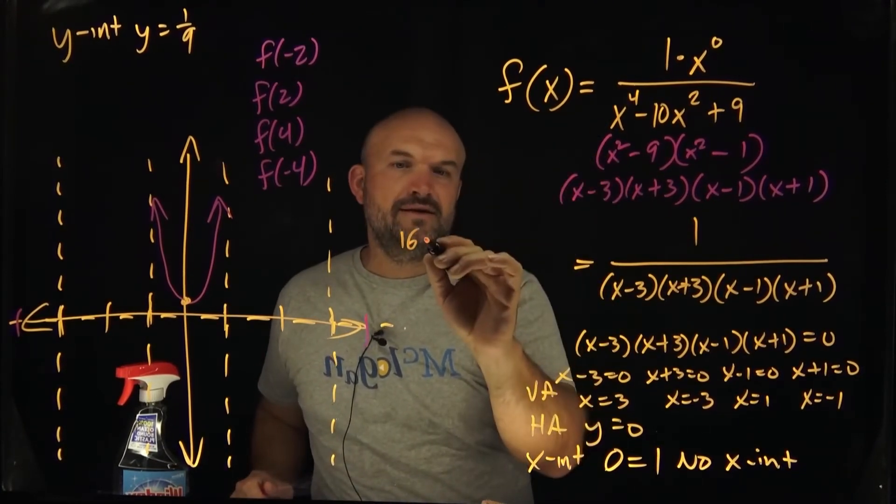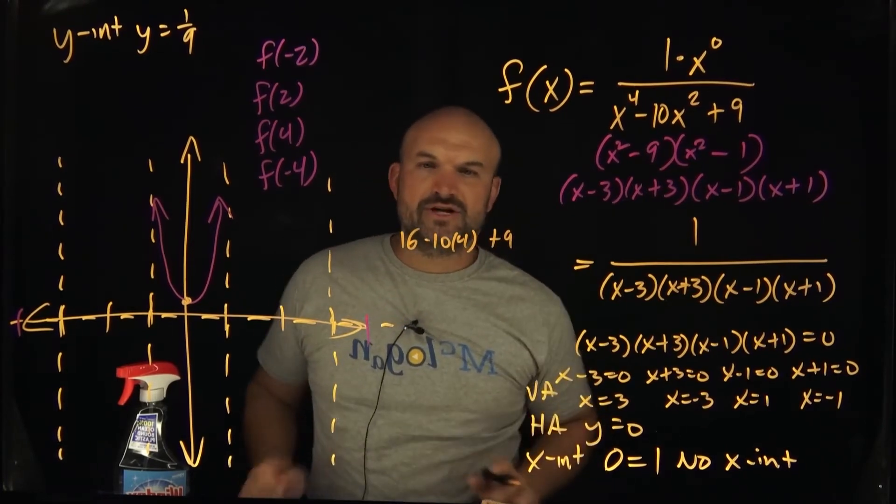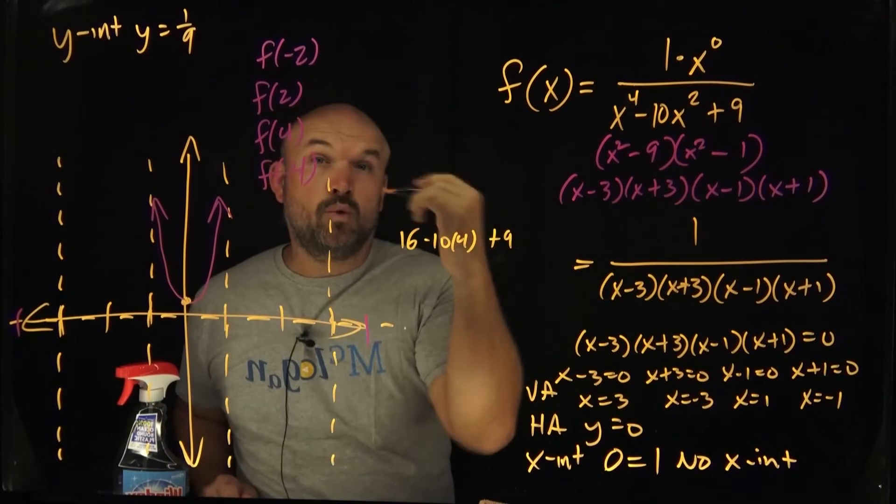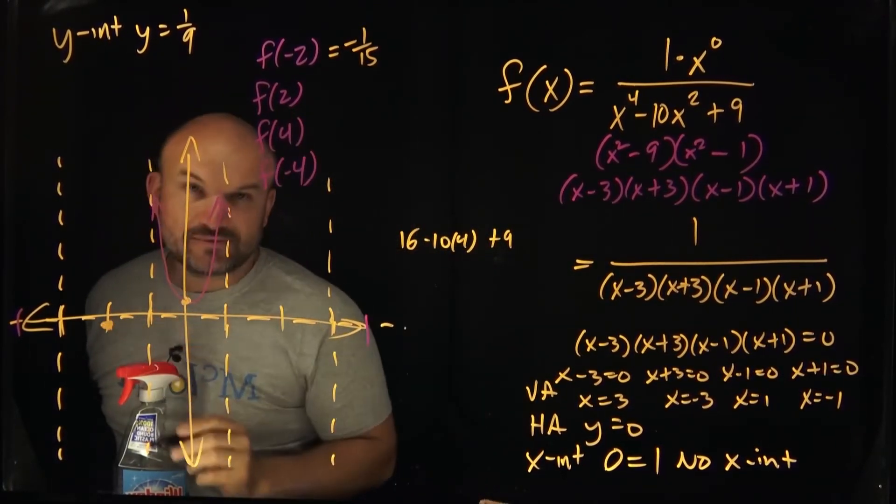So f of negative two, that's going to be 16 minus 10 times 4 plus 9. So therefore, that's going to be a negative number. Yeah, so negative 15. And remember, that's one over negative 15. So that's a really small number, but it's negative. That's important here. So it's going to be like somewhere here.